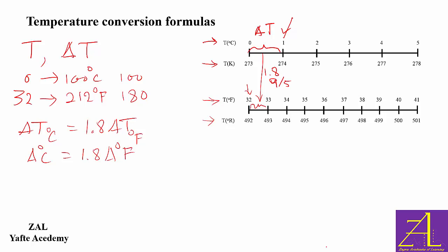But when we want to convert the readings, for example the reading of Celsius to Fahrenheit, we will write degrees F equals 1.8 degrees C plus 32.